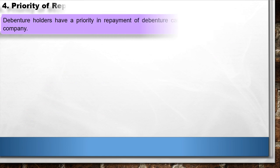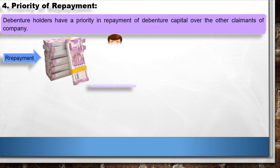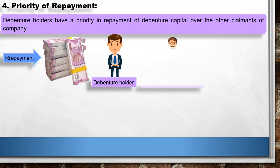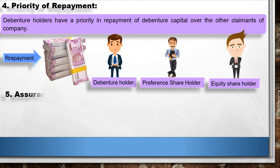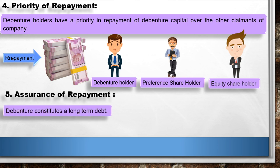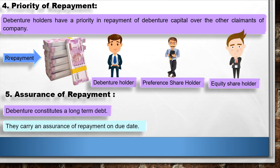4. Priority of Repayment: Debenture holders have a priority in repayment of debenture capital over other claimants of the company, such as equity shareholders and preference shareholders. 5. Assurance of Repayment: Debentures constitute a long-term debt and carry an assurance of repayment on the due date.